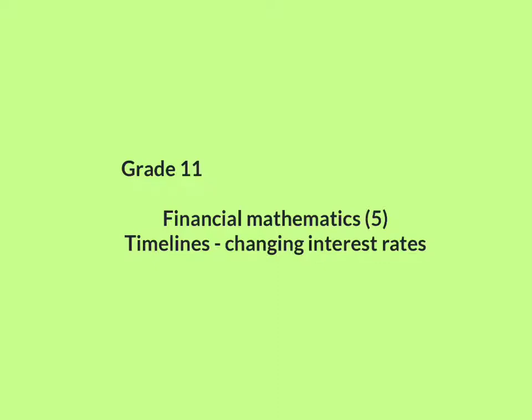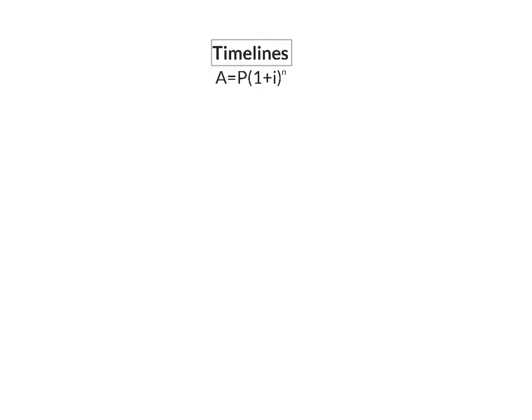In this lesson, we're going to have a look at how timelines can help us with changing interest rates. As soon as a specific amount receives interest, its value will change over time. We know that we can use our interest formulas to add the interest and calculate the new value. We are going to focus only on compound interest. In some problems, there will be a change in interest rate and there can be more than one amount either deposited or withdrawn from the account. To help you make sense of all of this, a timeline is needed.